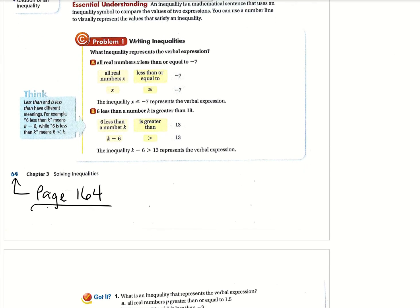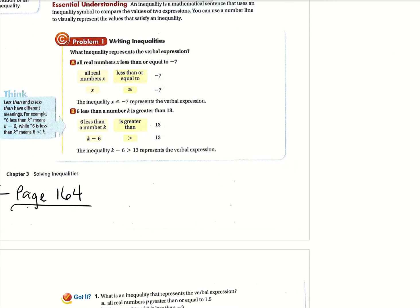We're going to look at problem 1 here — it's just sort of a warm-up for writing inequalities. Inequalities are things like greater than, less than, and also less than or equal to, and greater than or equal to. Let's look at letter A: all real numbers x, less than or equal to negative 7. So that would be x, then less than or equal to, then negative 7. I always look at it as the side with one point is the less than side, and the sign with two points is the greater than side.